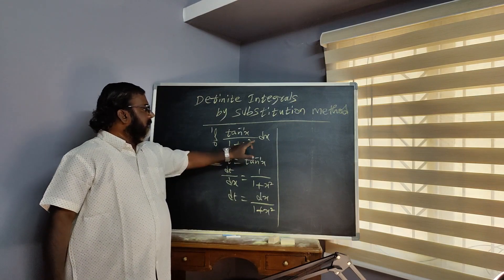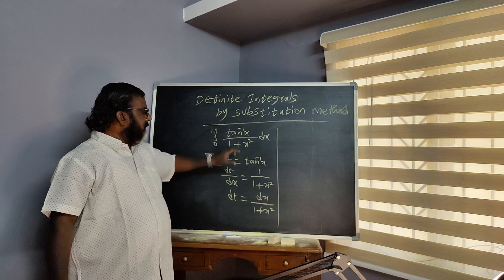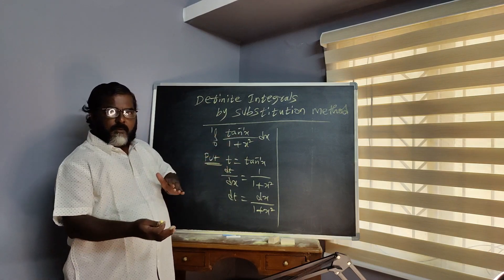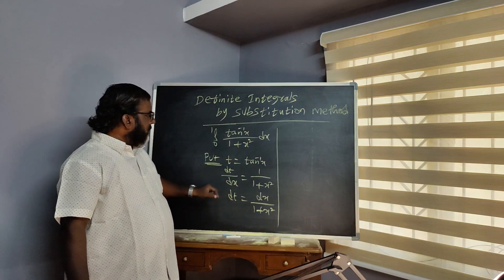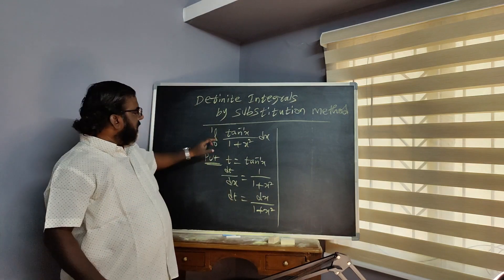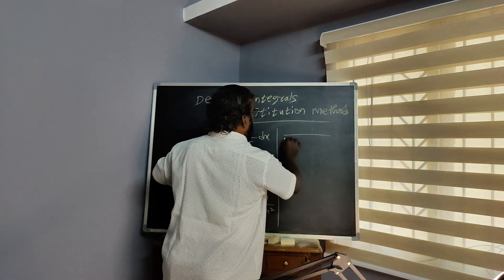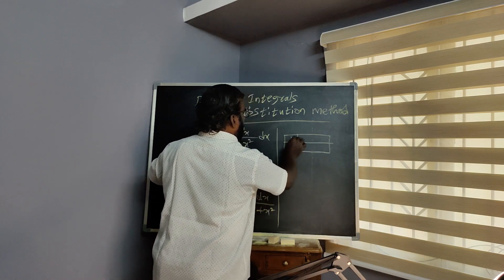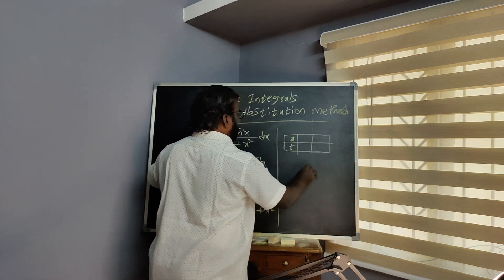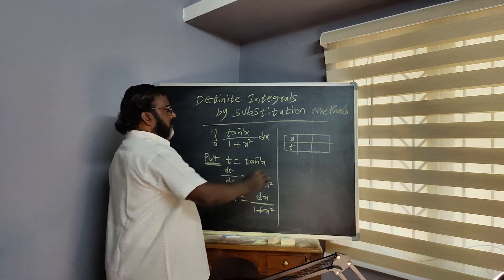Here is given dx with limits 0 to 1. So X will change, X converted into T, dX changes to dT. You have to change the limit. Changing limits: X limits are given 0 to 1.